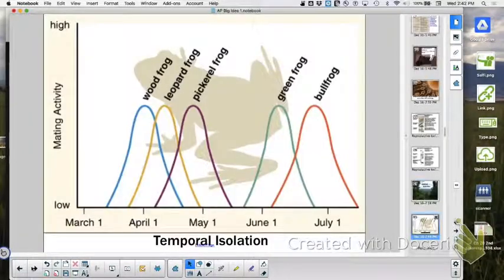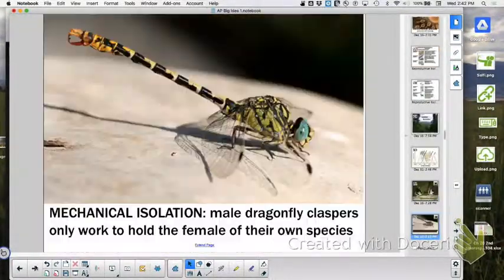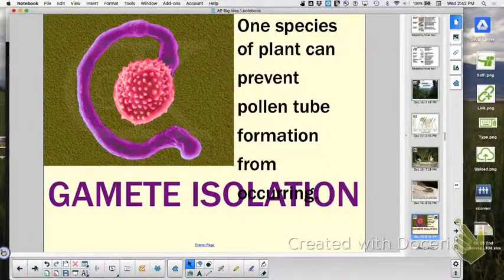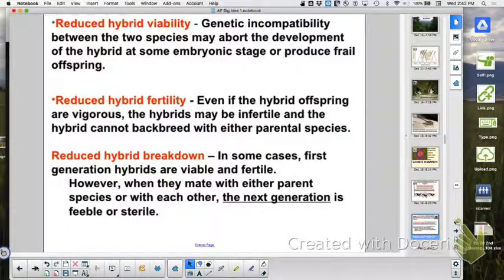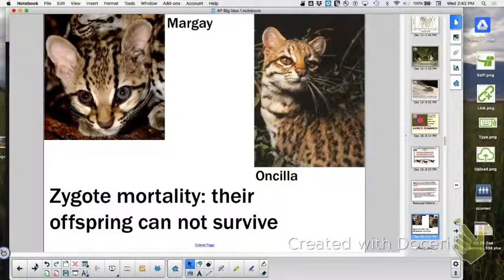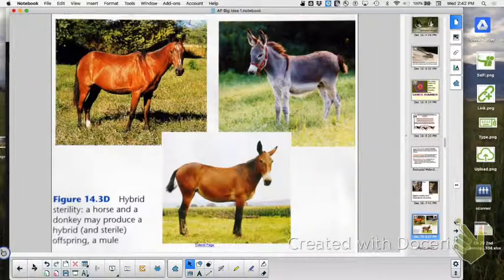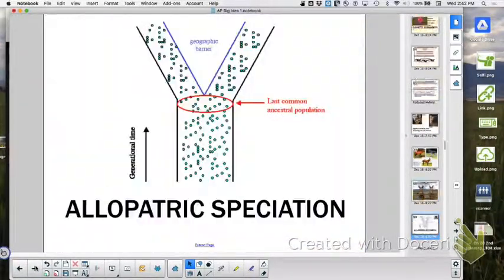Post-zygotic isolating mechanisms: maybe the hybrid has a spontaneous abortion, it doesn't develop all the way, or it's born and it's sterile, or it's born and it's not sterile but the F2 offspring are sterile. All of those are isolating mechanisms that keeps the speciation maintained, that they keep separate. If those are broken and they rejoin together and they can make viable offspring, then they're going to fuse back into one species again.